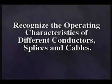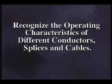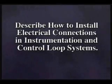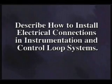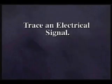All of the procedures described in this presentation are to be performed in accordance with OSHA standard 1910.147 covering the control and isolation of hazardous energy sources. At the completion of this course you should be able to recognize the operating characteristics of different conductors, splices, and cables; describe how to install electrical connections in instrumentation and control loop systems; trace an electrical signal; and identify general safety concepts of intrinsic safety and intrinsically safe systems.